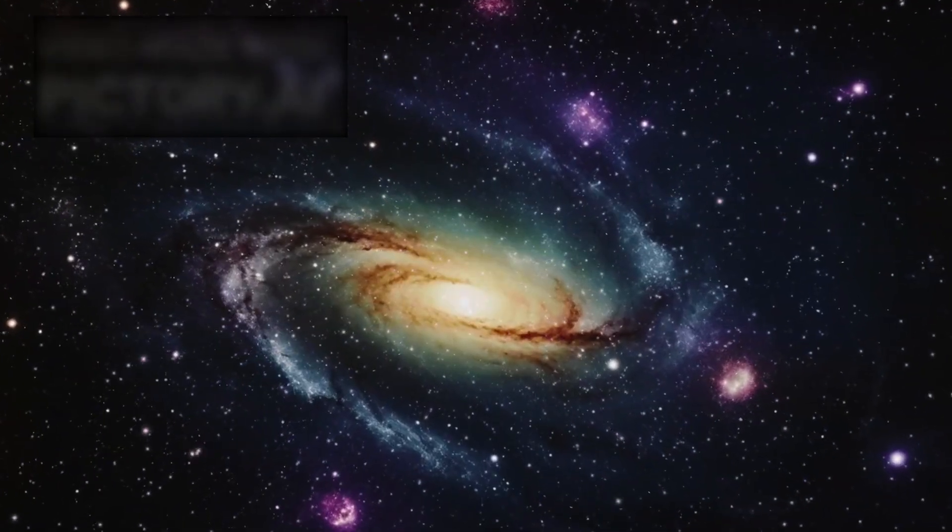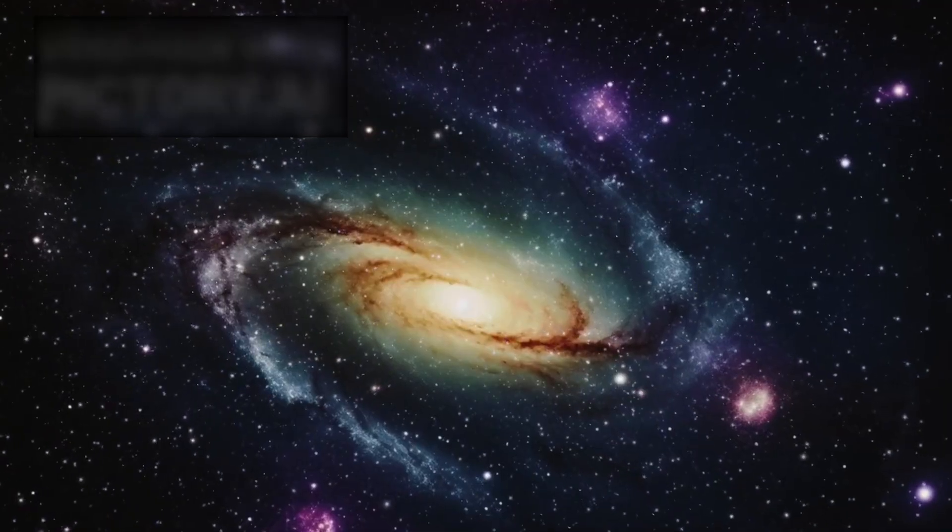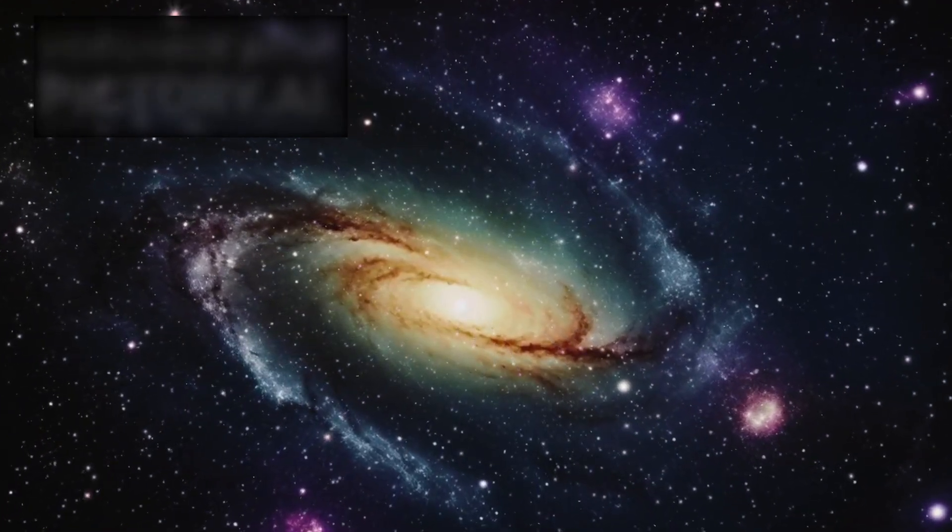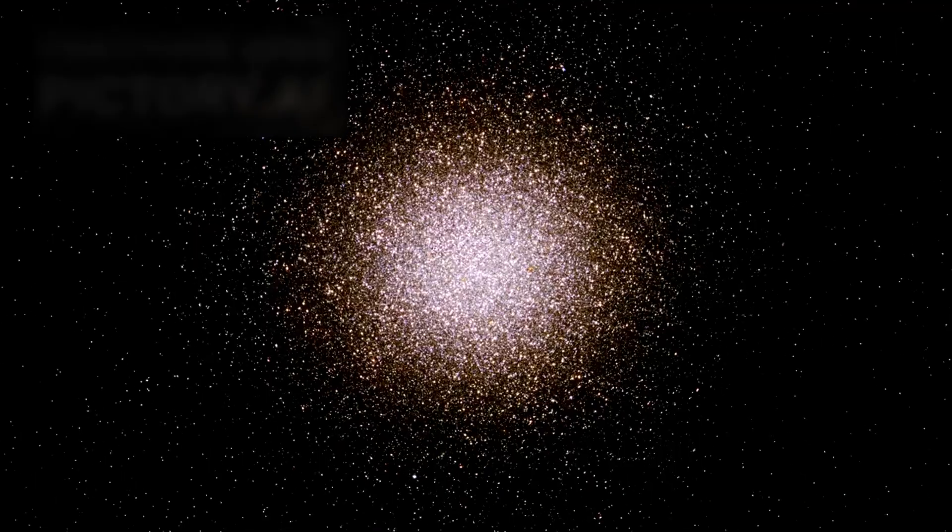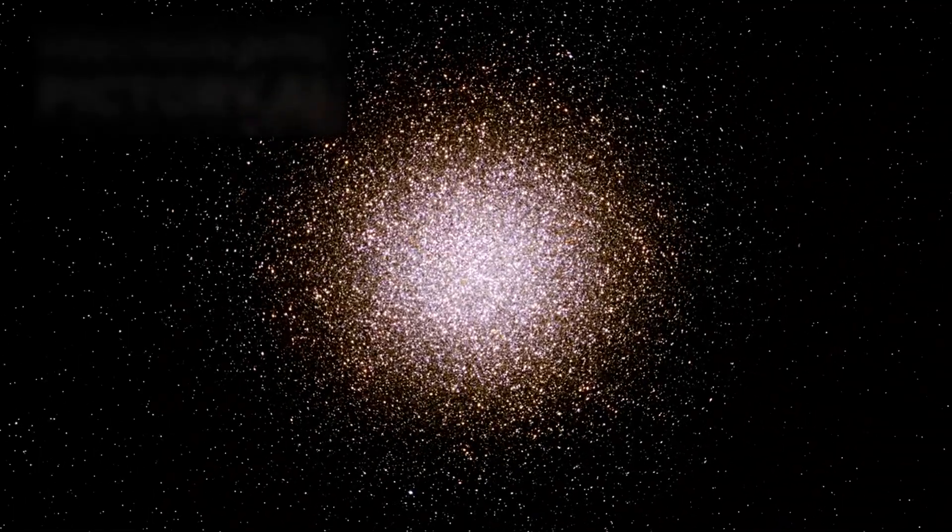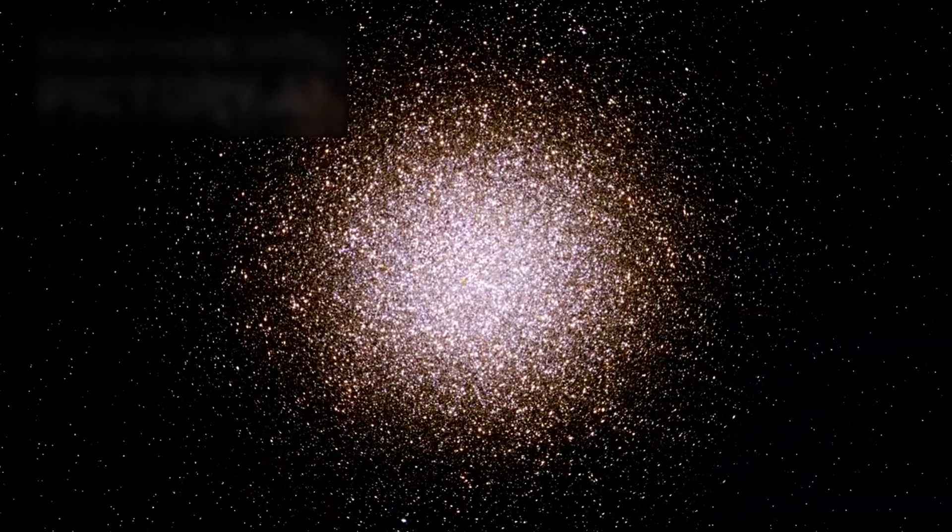Stars at the galaxy's outskirts move more slowly than predicted, leading some researchers to hypothesize that our galaxy may contain less dark matter than previously thought. The European Space Agency's Gaia mission, which has mapped nearly 2 billion stars, has been instrumental in these discoveries.